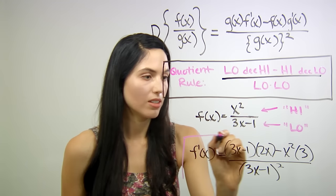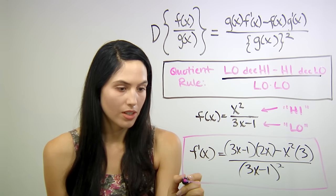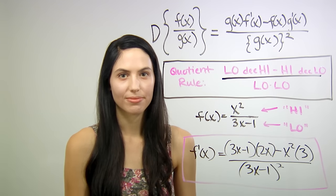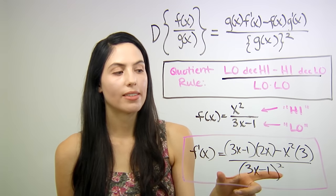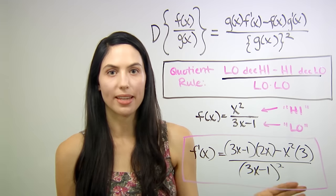And that is the answer to your function derivative using the quotient rule. Of course, you would need to simplify this answer. You can simplify the numerator, the top. But this is basically it.